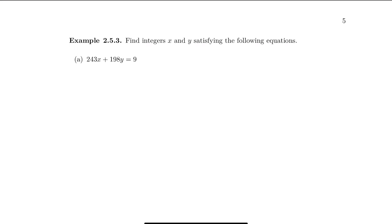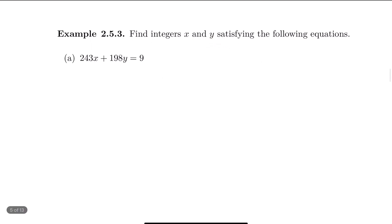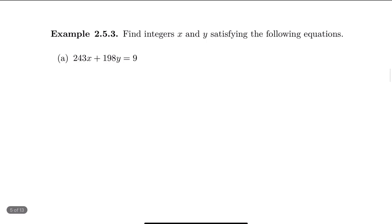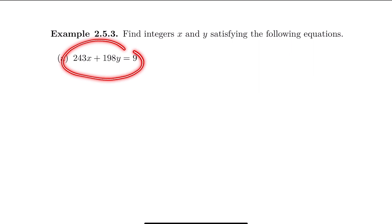In this video we are going to find integers X and Y satisfying the equation 243X plus 198Y equals 9. The number 9 should be the greatest common divisor of these two numbers. We need to find integers X and Y satisfying this equation, so we need to start with the Euclidean algorithm.